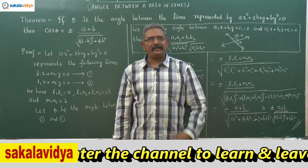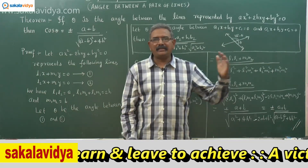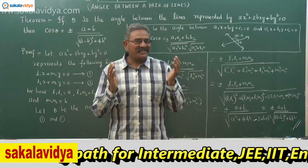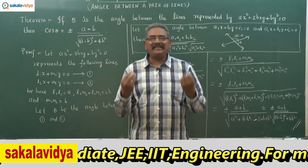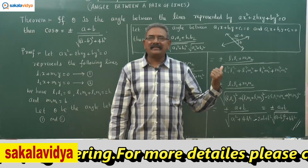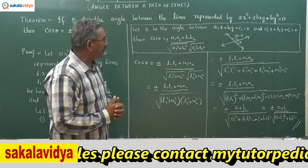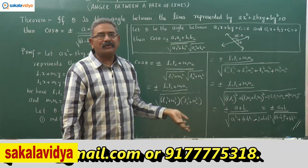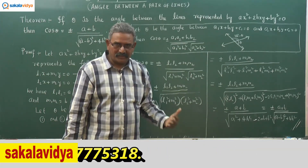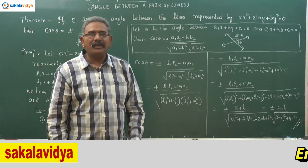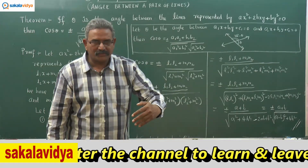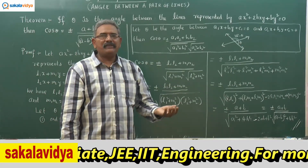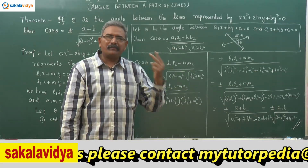In this theorem, remember: if cos theta > 0, theta is acute; if cos theta < 0, theta is obtuse. If cos theta = 0, then theta = 90°, meaning the pair of lines represents perpendicular lines. This means a + b = 0, i.e., the coefficient of x² plus the coefficient of y² equals zero. The converse is also true: if the coefficient of x² plus the coefficient of y² is zero, then the lines are perpendicular.